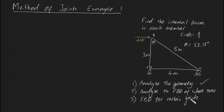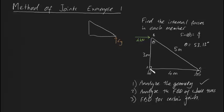Now let's go to the second step: analyze the free body diagram of the whole truss. I'm going to redraw the truss and replace the supports with reaction forces. C, because it's a roller support, can only produce a reaction force in the vertical — I'll call it CY. A is a pin support, so it produces reaction forces in the vertical, AY, and in the horizontal, AX. We've also got a four kilonewton force acting at joint B.